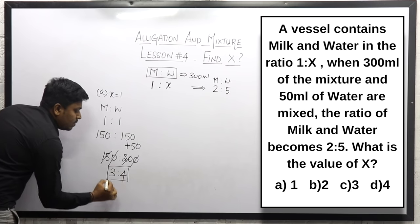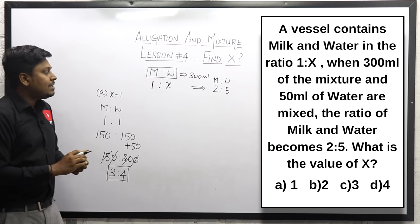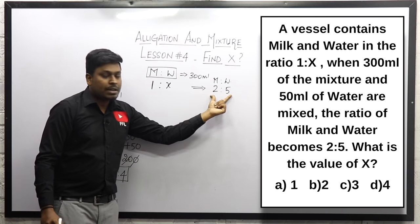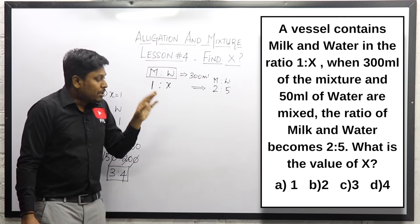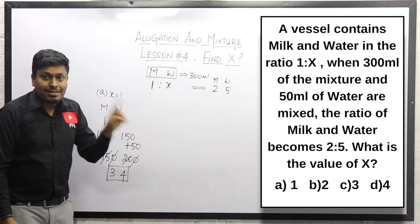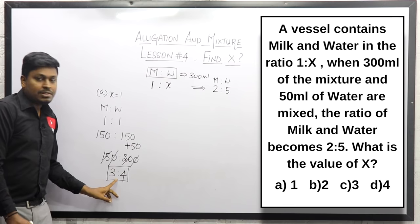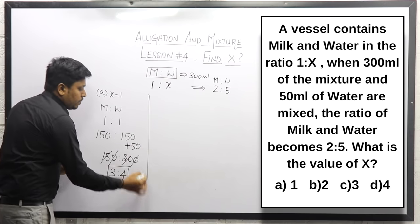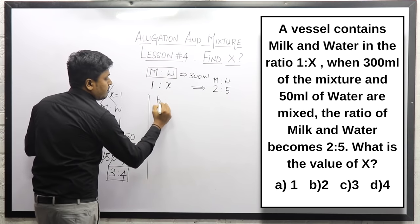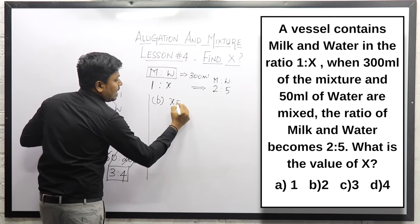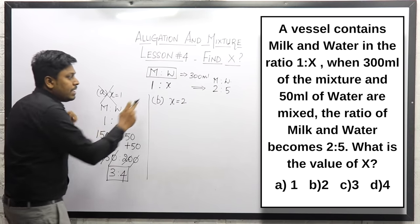The ratio 3 is to 4 does not match the required 2 is to 5, so option A is wrong. Let me move on to option B where the value of x is equal to 2. Substituting x equal to 2, milk and water ratio becomes 1 is to 2.